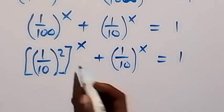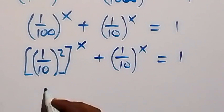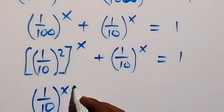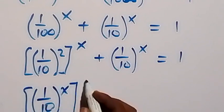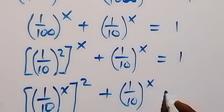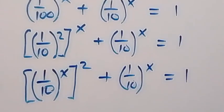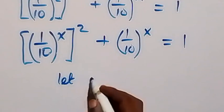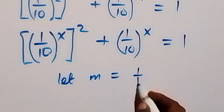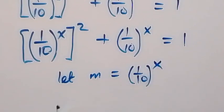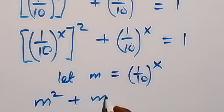From here, we can write this as 1 over 10 raised to power x all squared, plus 1 over 10 raised to power x, equals to 1. Now let's use a letter to represent 1 over 10 raised to power x. So let m be equal to 1 over 10 all raised to power x. Then from here, this gives us m squared plus m equals to 1.